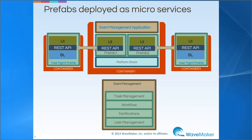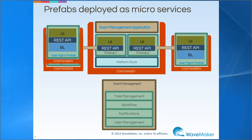When prefabs are deployed as a microservice, each prefab can be deployed into its own container, so that in future, if there is a need to scale up a particular microservice or prefab, we can do that by adding more containers to that service. This is called horizontal scalability.